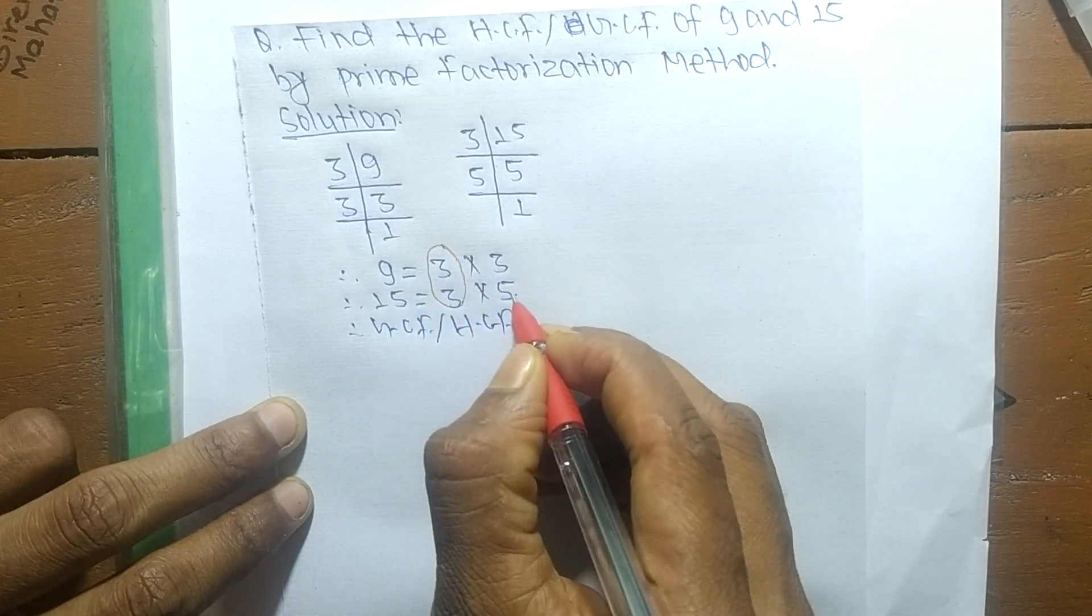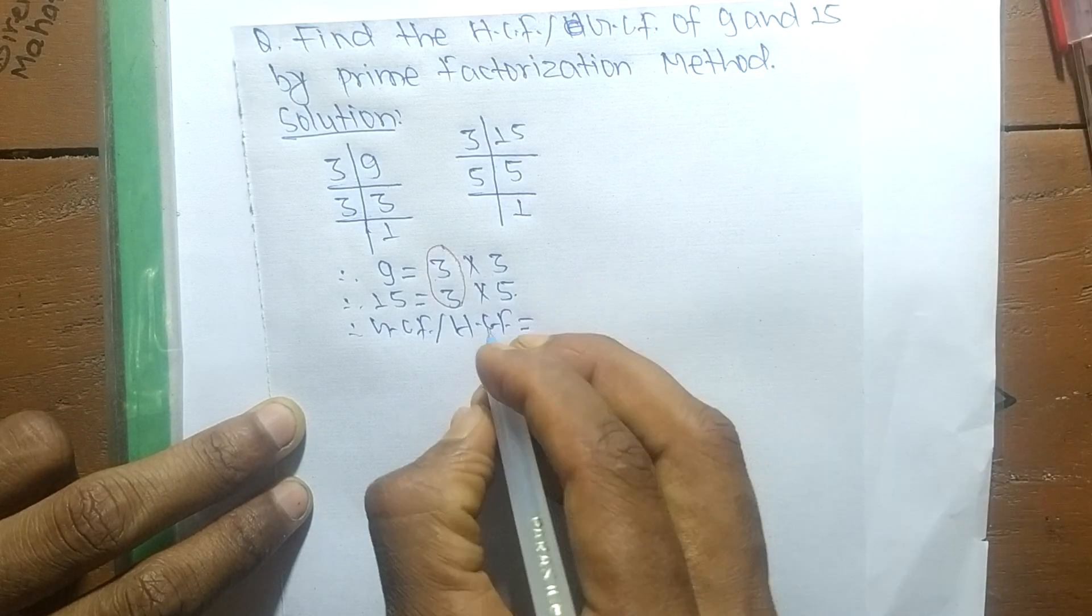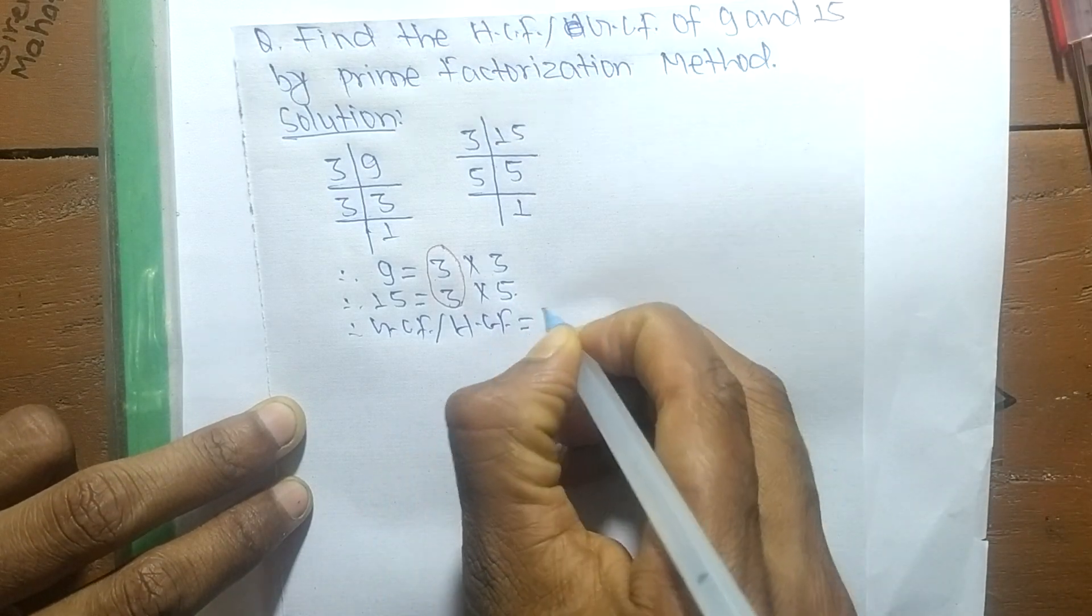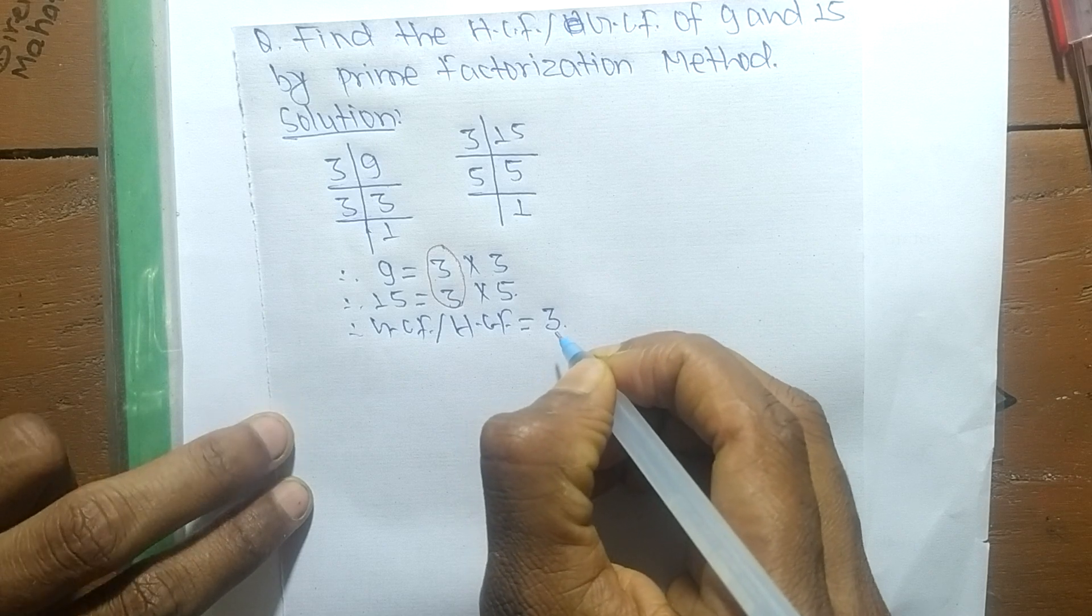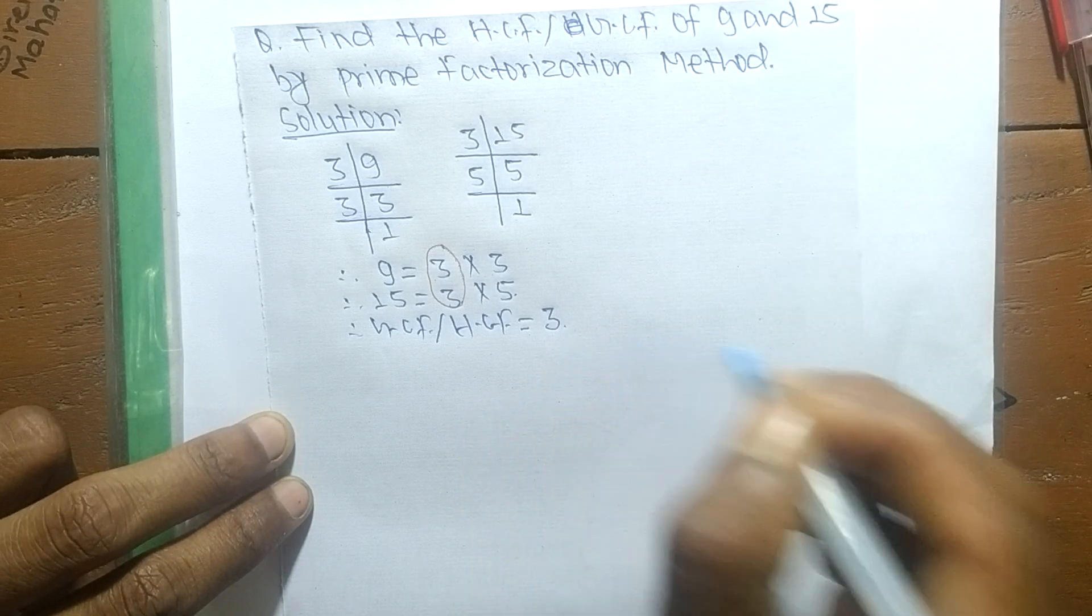So GCF or HCF is equal to 3. So this much for today and thanks for watching.